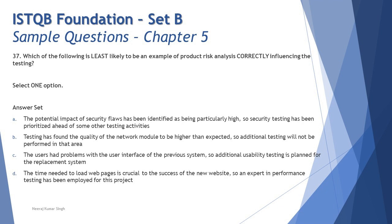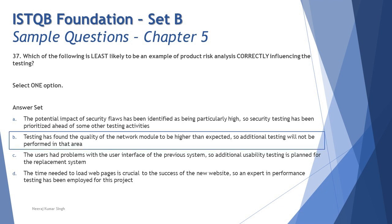The question asks which is least likely to be an example of product risk analysis correctly influencing the testing. Looking at Option B — it talks about the quality of testing on the network module being higher than expected. This is not related to product risk analysis. Product risk analysis mainly deals with criticality, impact of a risk, or likelihood of an adverse event. Option B describes a testing outcome, not a risk identification or analysis activity. So the correct answer is B.